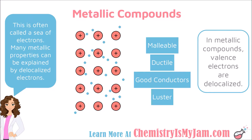In this illustration, the positive signs are representing atoms that are tightly packed together. You can see the positive nuclei are tightly packed together and then the electrons are moving freely throughout the structure. This is often called a sea of electrons, and it explains many of the properties that we see with a metal.